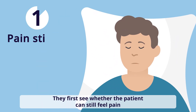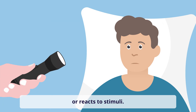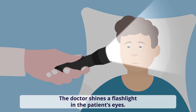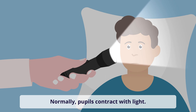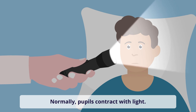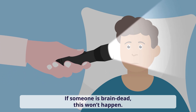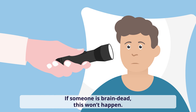Step 1. Doctors first see whether the patient can still feel pain or reacts to stimuli. The doctor shines a flashlight in the patient's eyes. Normally, pupils contract with light. If someone is brain dead, this won't happen.